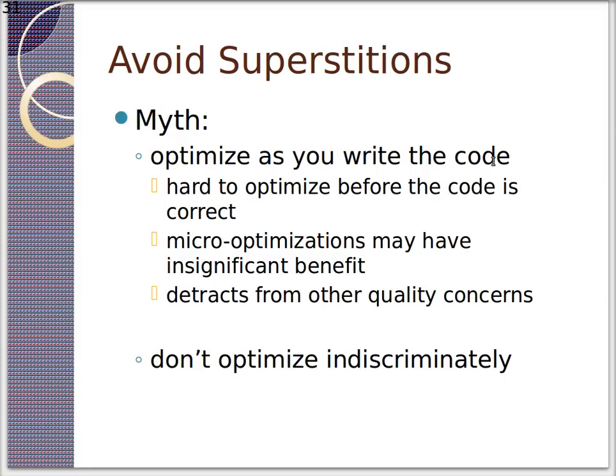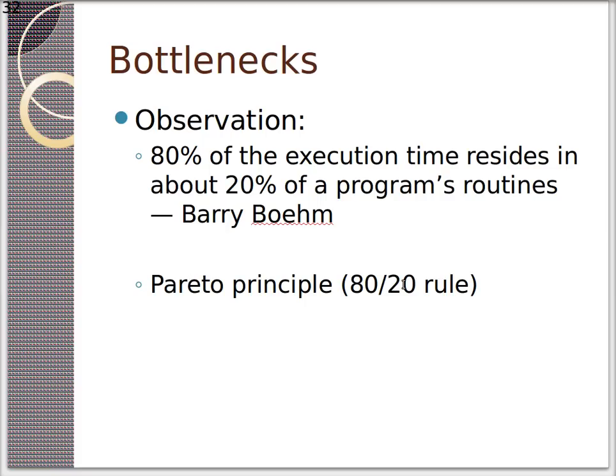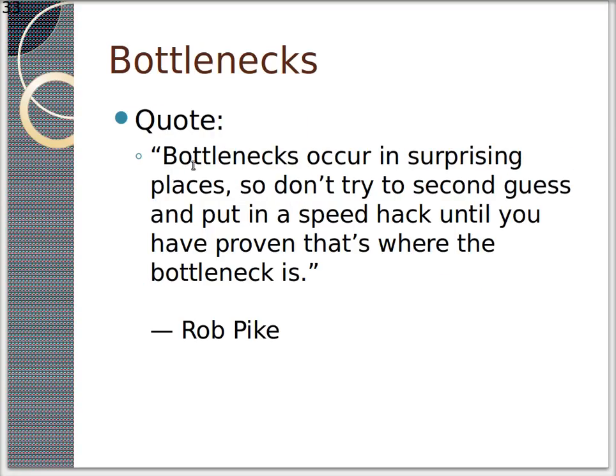This is not really a myth, but optimize as you write code. The thing is, it's hard to optimize before the code is correct. You shouldn't pre-optimize. Micro-optimizations tend to have an insignificant benefit because there's an 80-20 rule where most of your code isn't going to be where you're optimizing. So don't optimize indiscriminately. Also, optimizing ahead of time tends to make poorly maintainable code. So the Pareto principle, the 80-20 rule, as mentioned by Barry Beam here, 80% of execution time resides in about 20% of the program's routines. Bottlenecks occur in surprising places, so don't try to second guess and put in a speed hack until you've proven that's where the bottleneck is. This is Rob Pike. He should know. He did the Unix in C. This guy's a smart guy. So trust him there.